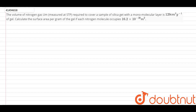Hello guys, this is your question. The volume of nitrogen gas was measured at STP, required to cover a sample of silica gel with a monomolecular layer, is 129 cm³ per gram of gel. Calculate the surface area per gram of the gel if each nitrogen molecule occupies 16.2 × 10⁻²⁰ meter square.